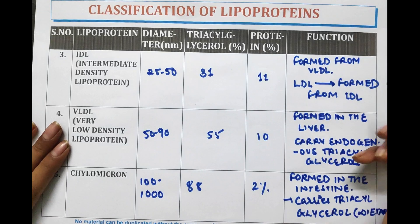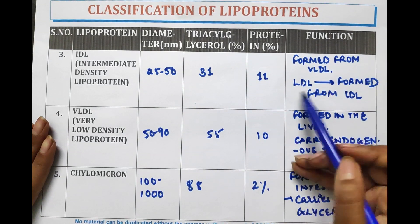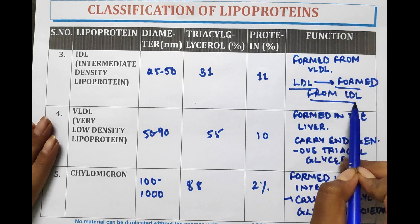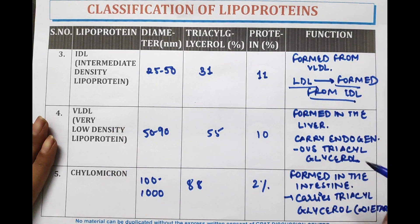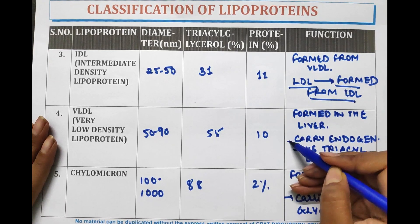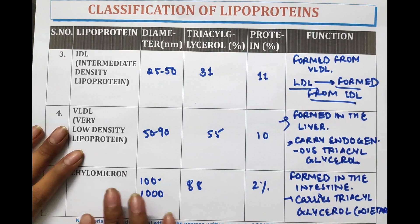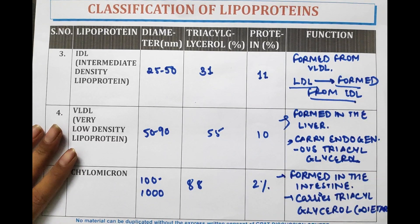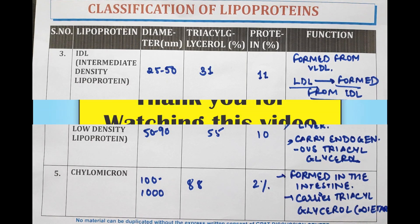To summarize: IDL is formed from VLDL, and LDL is formed from IDL. VLDL helps in carrying endogenous triacylglycerol and is formed in the liver. Chylomicron is formed in the intestine and helps in carrying dietary triacylglycerol. That's all for this video — thank you for watching.